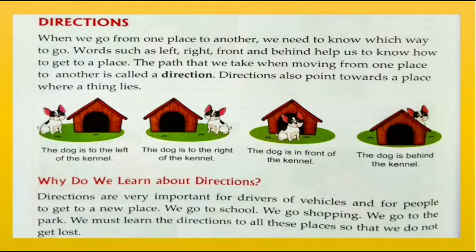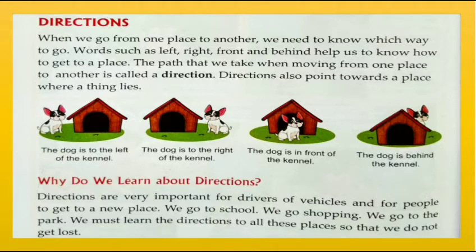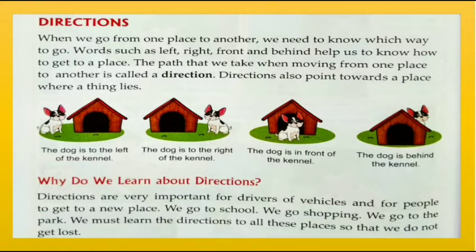About directions: when we go from one place to another, we need to know which way to go. Words such as left, right, front, and behind help us to know how to get to a place. The path that we take when moving from one place to another is called a direction. Directions also point towards a place where a thing lies. For example, in the first image the dog is to the left of the kennel; in the second image the dog is to the right of the kennel; in the third image the dog is in front of the kennel; and in the fourth image the dog is behind the kennel.